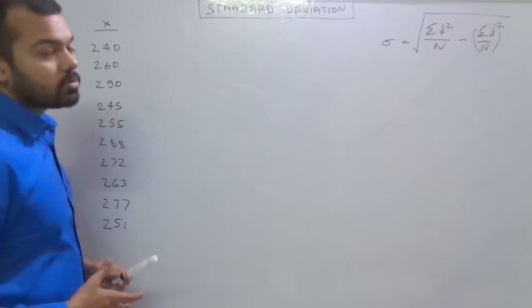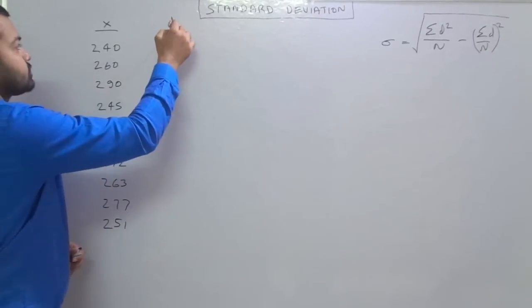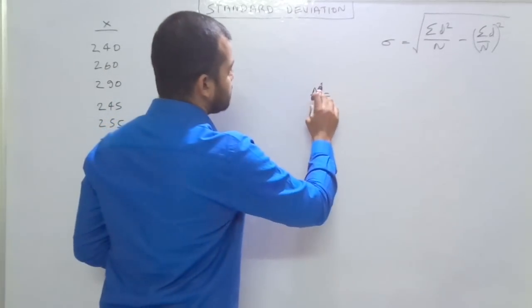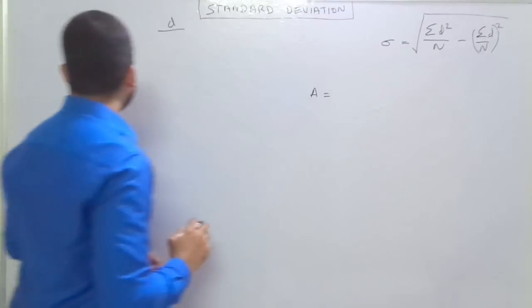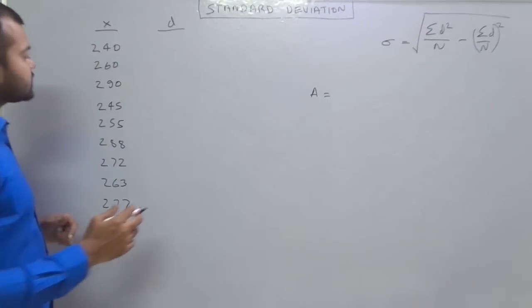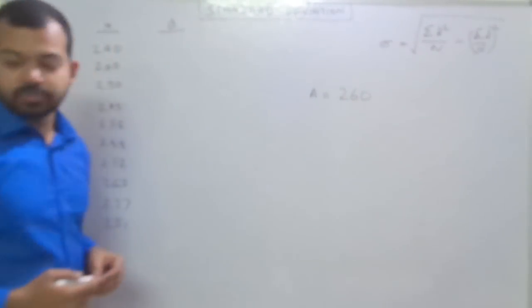Now the requirement of the formula is very simple. You have to calculate the deviations. But before that, we have to assume some figure that is mean. Here we can assume anything in between this. So we can assume 260. 260 is our assumed mean.